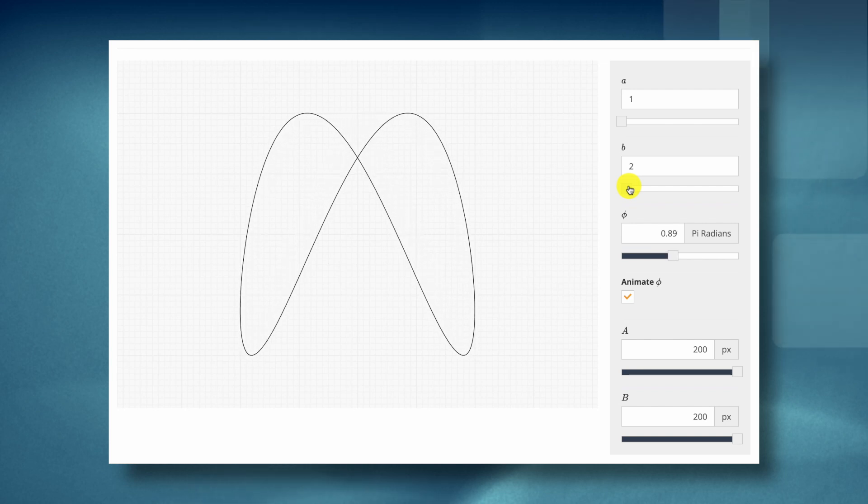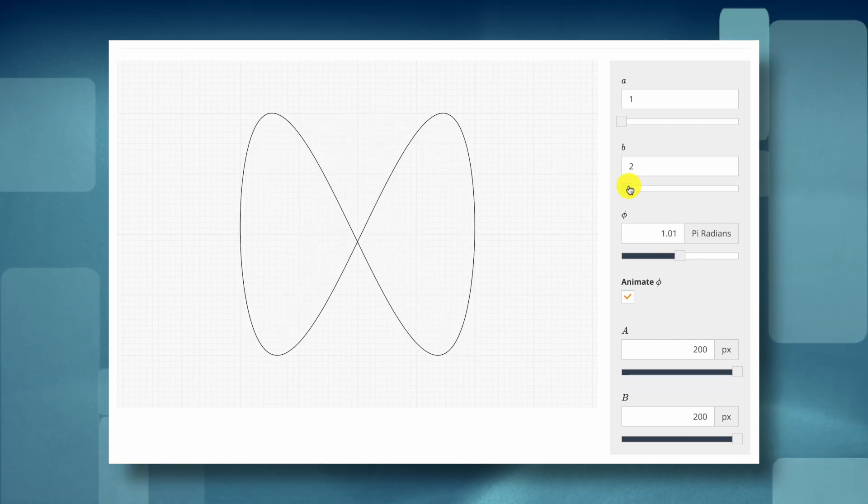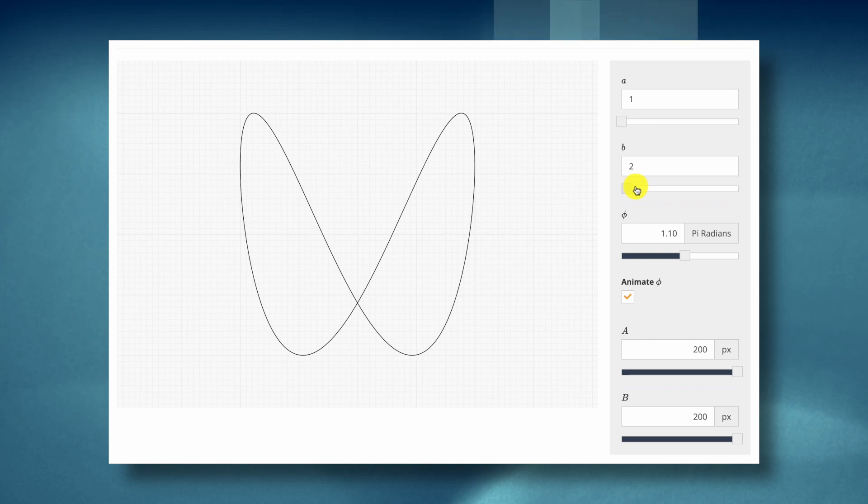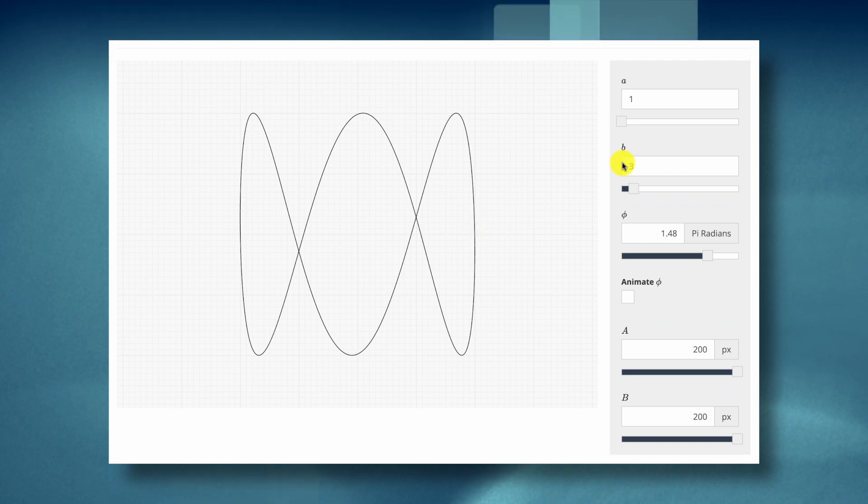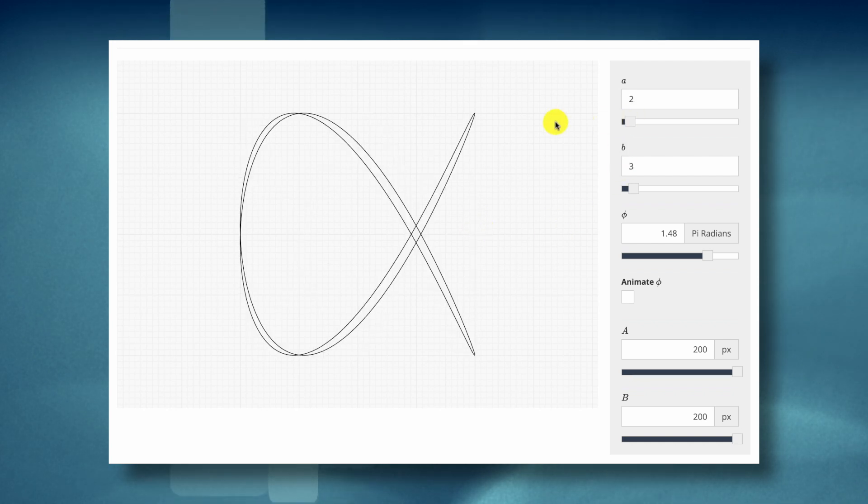And with double the frequency on one of the channels you get a Lissajous figure like this. It's interesting enough you can count the peaks of the figure in each direction to find out the ratio. For instance 1 to 3 gives you three peaks in the x direction and one only in the y direction.